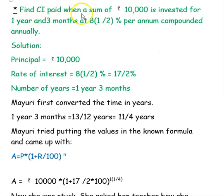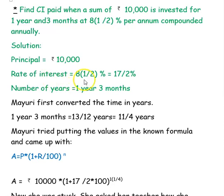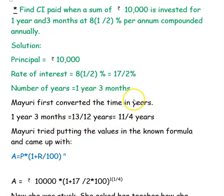Next question: find the compound interest paid when a sum of Rs. 10,000 is invested for 1 year and 3 months at 8.5% per annum compounded annually. The principal is Rs. 10,000. The rate of interest is 8.5%, which as a fraction is 17/2%. The number of years is 1 year 3 months. Converting the time to years: 3 months is 3/12 years, which is 1/4 year. So the total time is 1 and 1/4 years.